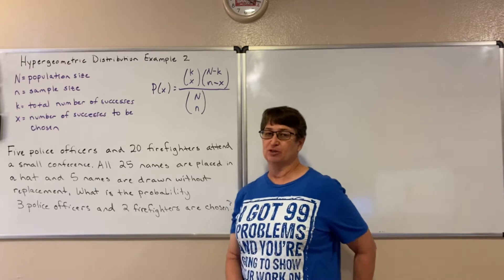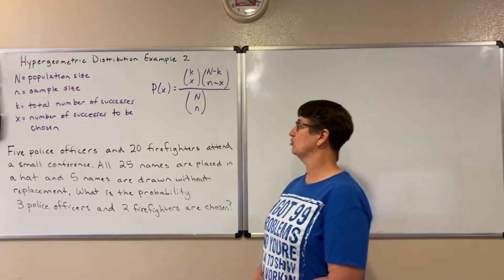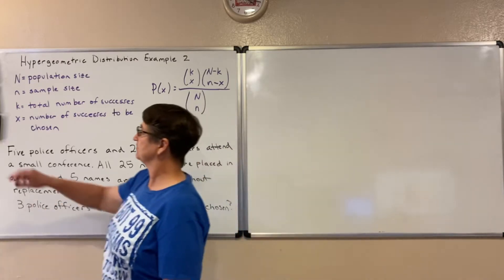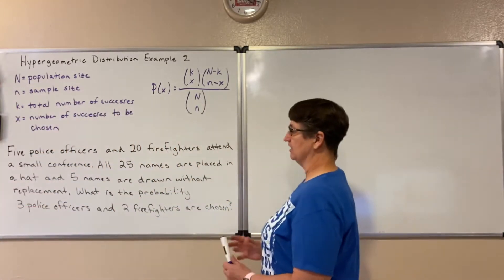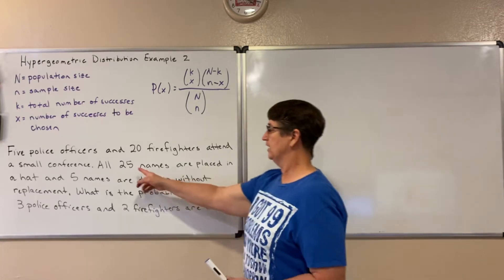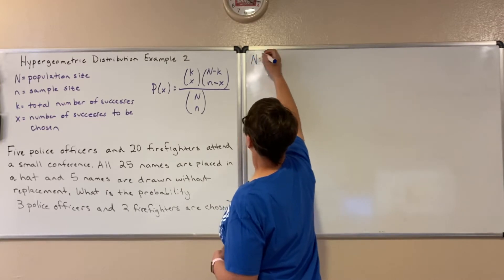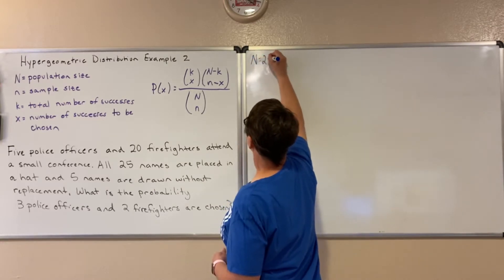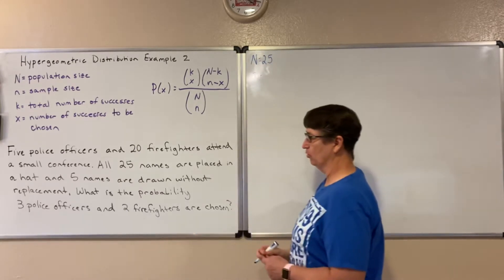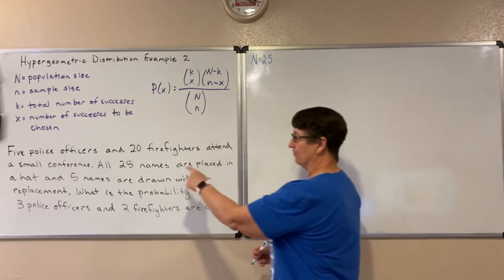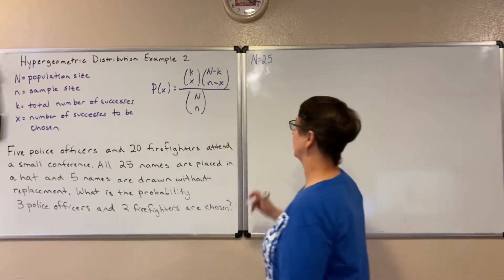With hypergeometric distributions we have a population and we're choosing a sample from it. In this case our population size, the whole total group, is 25. So our N will be 25, and from that we will be choosing a sample. All 25 go in the hat but only five are chosen, so five here is our sample.